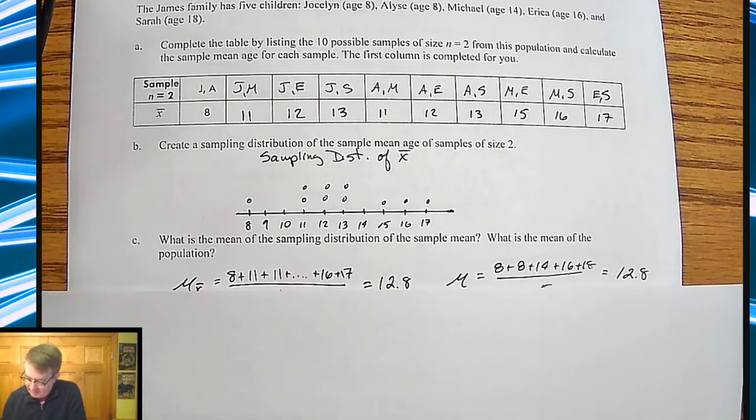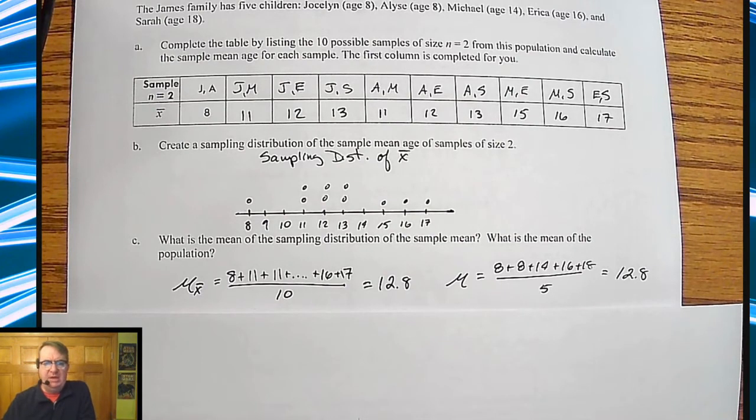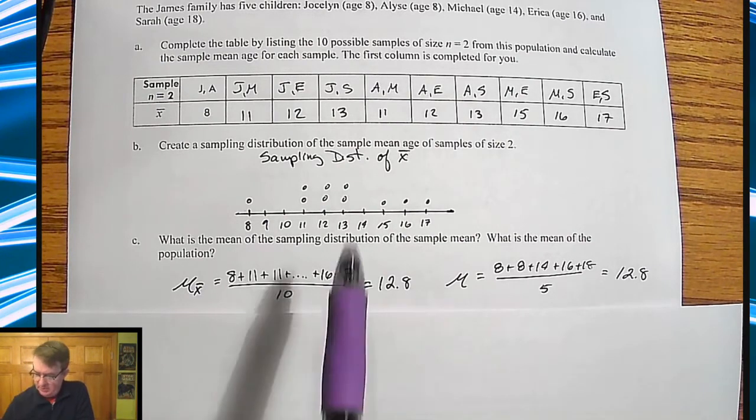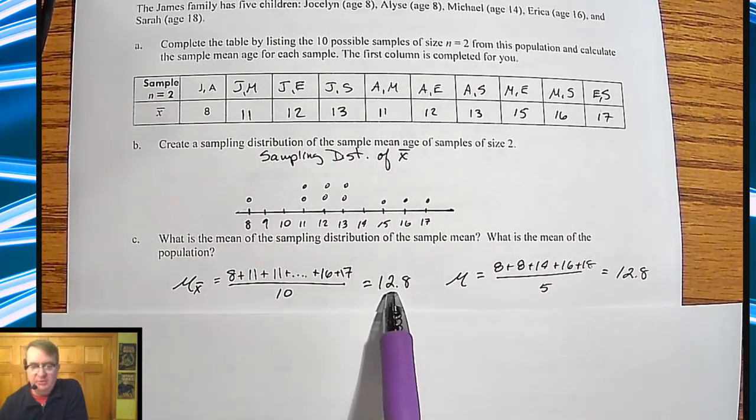And then lastly, almost lastly. So it says, what's the mean sampling distribution or what's the mean sampling distribution of the sample mean? So we're defining the mean of the means. So these are all means. We're going to find the average of the means. So you're going to add all these up, and you get an answer of 12.8.